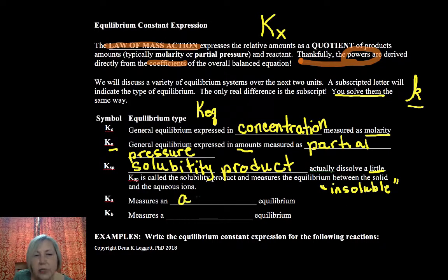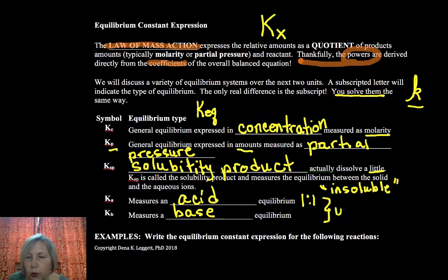Ka is going to be for an acid equilibrium. Those can be a little challenging, but the good news is those are all one to one mole ratios. So that makes them a little simpler. Kb is for a weak base. So these would be for weak acids and bases.